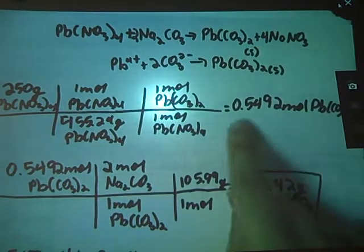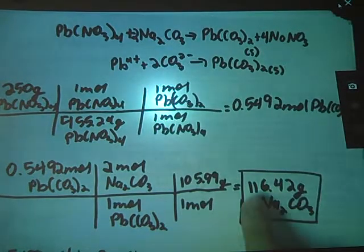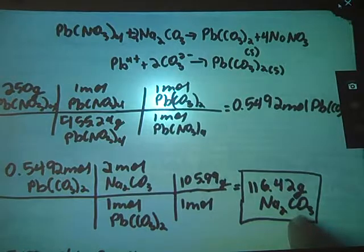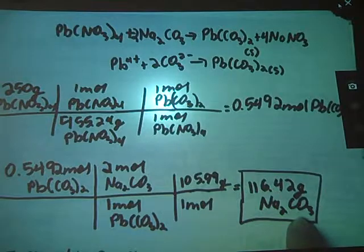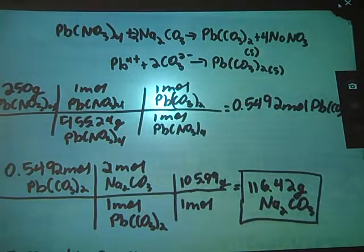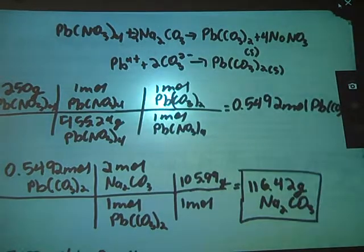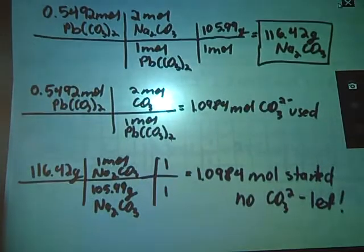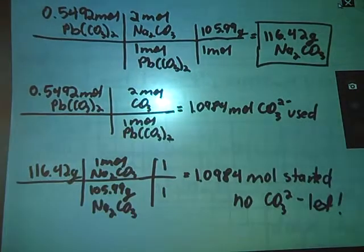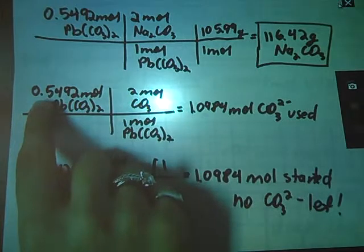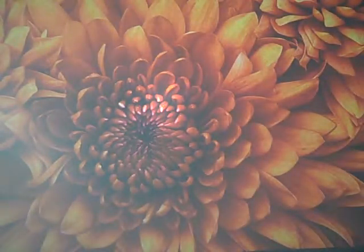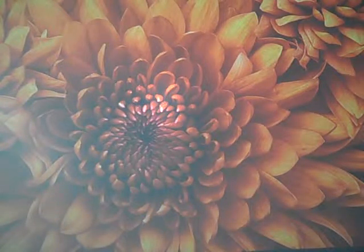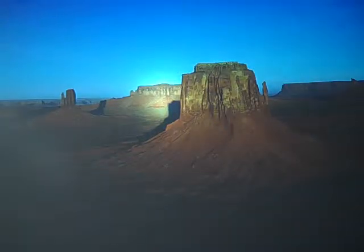So to create exactly this much product, I would need exactly this much carbonate since it's a one-to-one relationship here. So that means that I should have also run out of carbonate. There shouldn't be any left. It should all be present in this solid bound up. But just in case you don't believe me, here's the math. So I started off with 0.5492 moles of the carbonate.